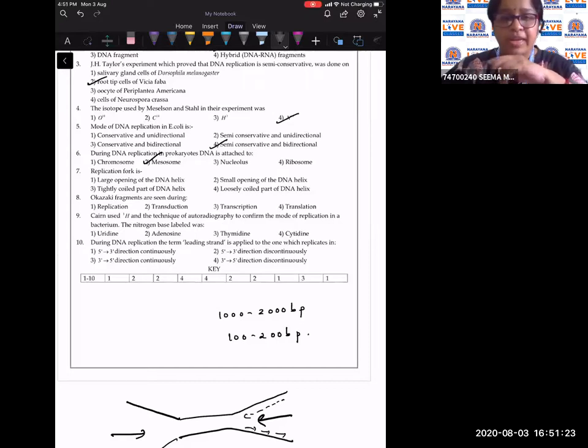Replication fork is: it is a small opening of the DNA helix. So the DNA helix opens for a small amount and that forms a Y-shaped replication fork. So answer to seventh question is the second option.